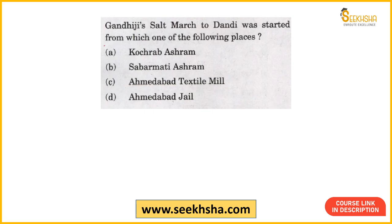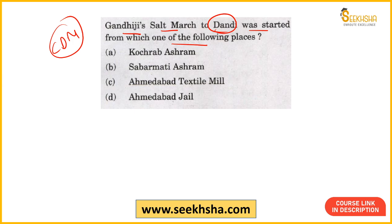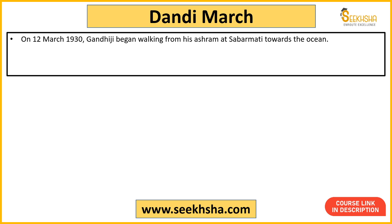Let us quickly start. The first question: Gandhi Ji's Salt March to Dandi was started from which of the following places? This is about the civil disobedience movement — Dandi March, where Gandhi broke the salt law. You need to know all facts: where he started, when he started, when he reached. The right answer is Option B — Sabarmati Ashram.